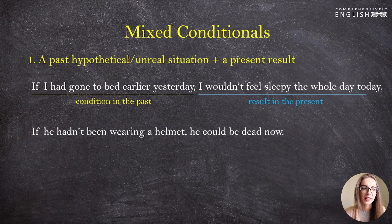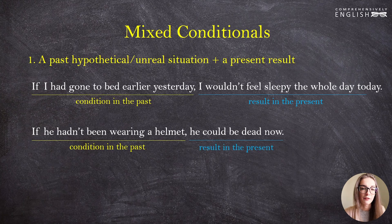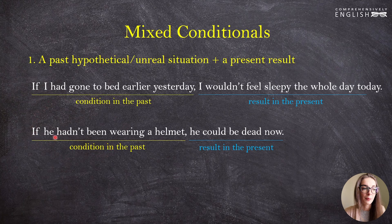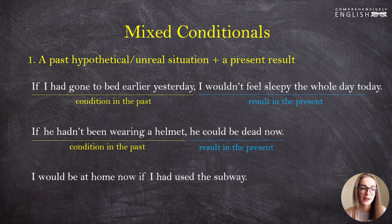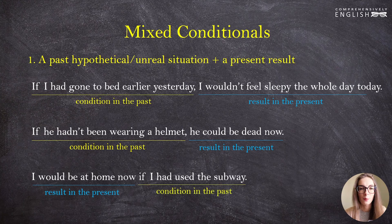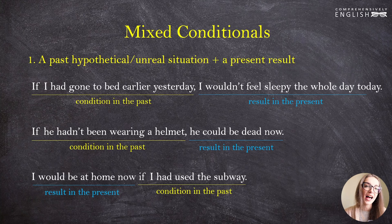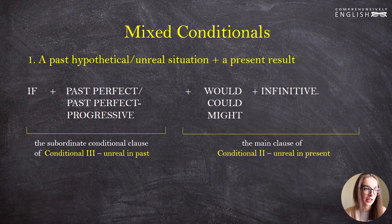We have a condition in the past and the result in the present: 'If he hadn't been wearing a helmet, he could be dead now.' Looking at the components: the conditional clause has the past perfect continuous — this is a half of the third conditional. And 'could be' — the first form of the verb — this is a half of the second conditional. One more example: 'I would be at home now if I had used the subway.' The result is in the present and the condition is in the past. These sentences suggest that something would be different now if something else had been done in the past.